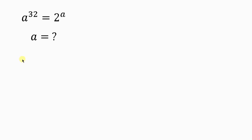What's going on everybody? Welcome back to my YouTube channel. Look at this nice and beautiful question on the board that we're going to be solving. The question says: find the value of a for which a to the 32 is equal to 2 to the a.